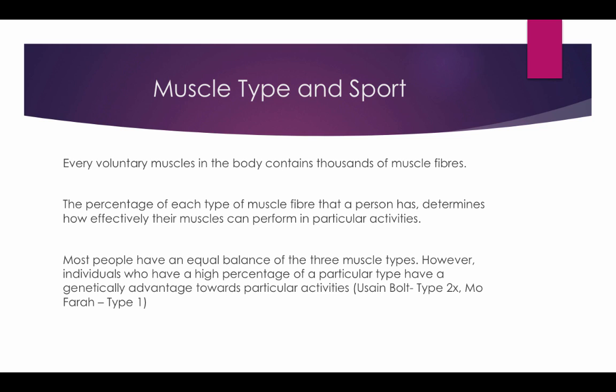Every voluntary muscle in the body contains thousands of muscle fibers. The percentage of each type of muscle fiber that a person has determines how effectively their muscles can perform in particular activities. Most people have an equal balance of the three muscle types; however, individuals with a high percentage of a particular type have a genetic advantage. For example, Usain Bolt has a high percentage of Type 2X muscle fibers and Mo Farah has a high percentage of Type 1 muscle fibers.